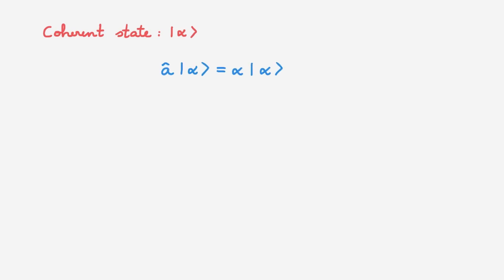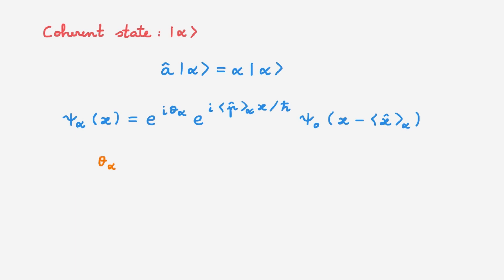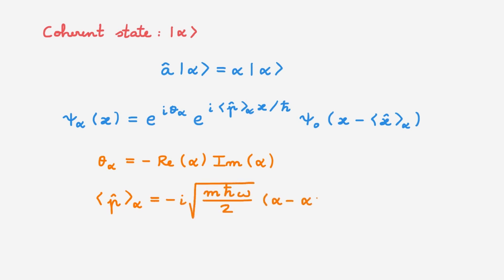And we're done! Let's summarise. A coherent state is the state of the quantum harmonic oscillator that we typically label with the ket alpha, defined as an eigenstate of the lowering operator with eigenvalue alpha. What we found today is that we can write coherent states in the position representation via their wave function psi_alpha, given by the product of a first exponential times a second exponential times the displaced ground state wave function of the quantum harmonic oscillator. In this expression, the phase theta_alpha is equal to minus the real part of alpha times the imaginary part of alpha. The expectation value of the momentum operator in state alpha is equal to a prefactor times alpha minus alpha-star, and the expectation value of the position operator in state alpha is equal to another prefactor times alpha plus alpha-star.